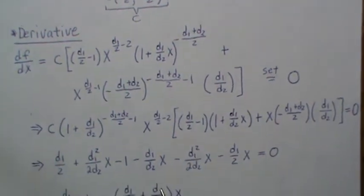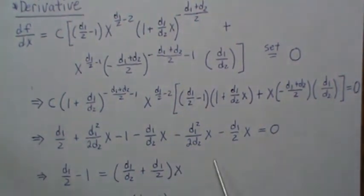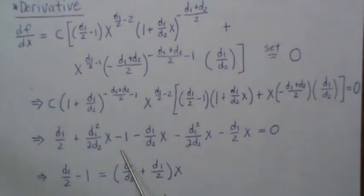Now we combine like terms, so there's an X common in all this. We get this. So we take that to the other side, what's left over is this.